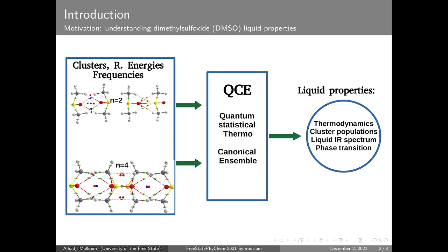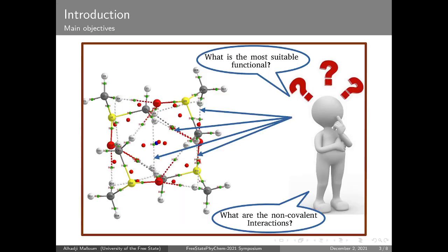We started at the basic level: determining all possible structures, then calculating their relative energies and vibrational frequencies, to later use them in the Quantum Cluster Equilibrium theory. In this work, we determined all possible structures from dimer to tetramer, limiting our study to N=4 solvent molecules, as going beyond this would be computationally very expensive.